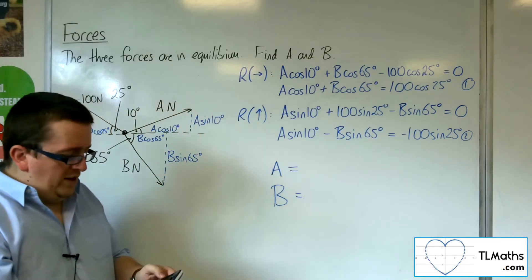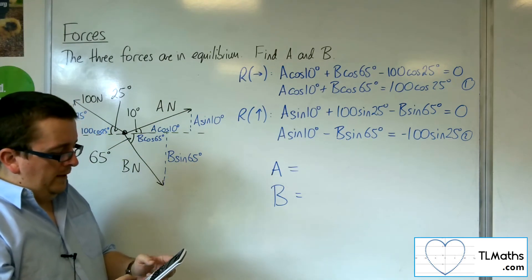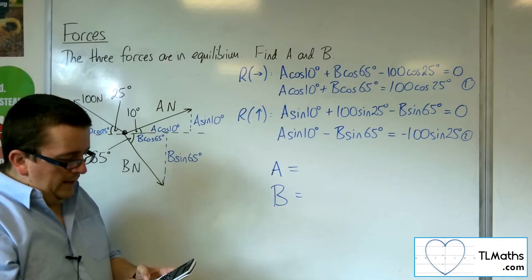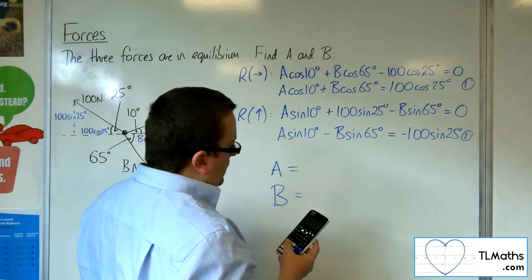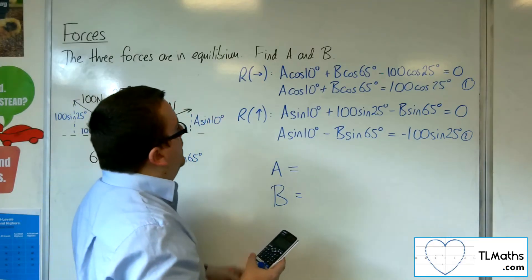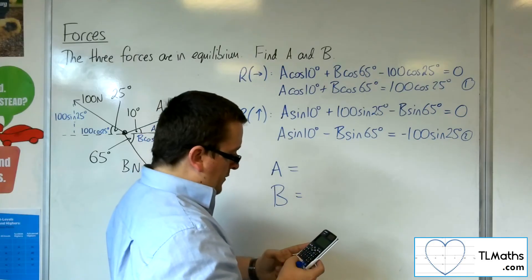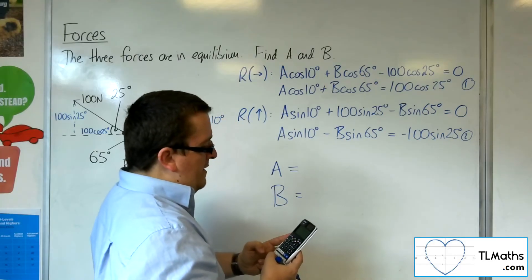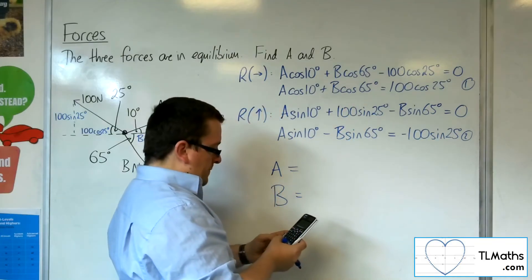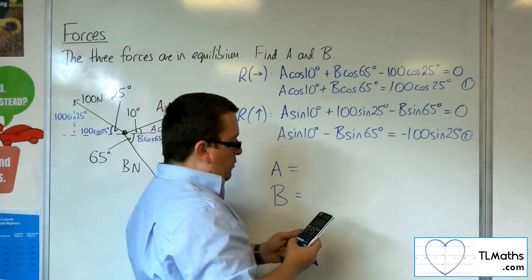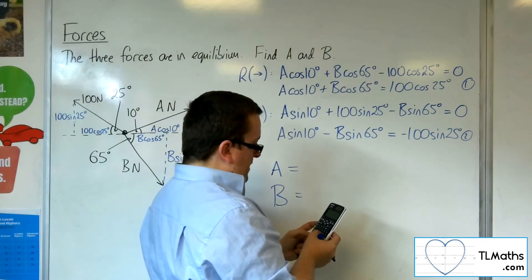So we're going to go into menu, and then we want to go into A for equation function, simultaneous equation number one, and the number of unknowns is two. So I'm going to use A as the X and B as the Y. So we've got cosine of 10 times the X. So you should get 0.9848 up here. Cosine of 65, 0.4226, is equal to 100 times cosine of 25, 90.63.